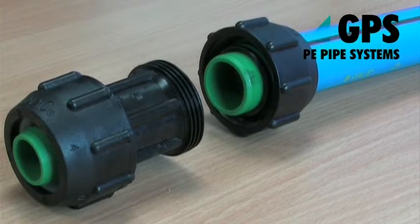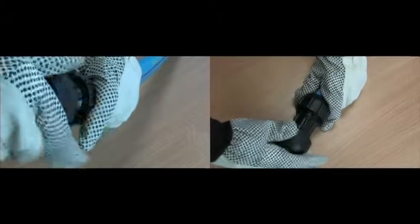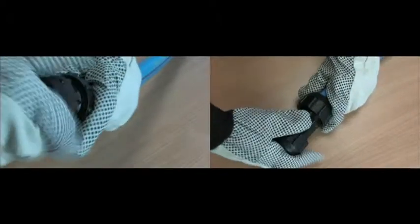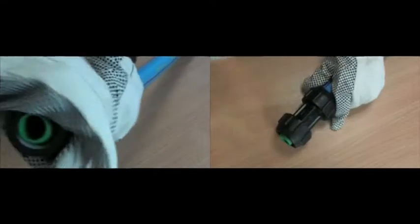Offer the body of the fitting to the Protector Line pipe end and screw the nut onto the fitting body. Continue to tighten the nut until the thread on the body is no longer visible.